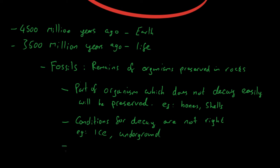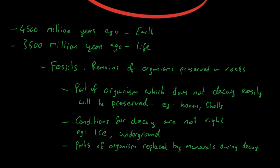Another example is when parts of an organism are actually replaced by minerals during decay. So if an organism is decaying and decay is happening, parts of the organism are actually replaced by other substances — minerals like calcium or sodium. Things which weren't actually present in the organism to start with could replace those parts that are decaying, but they're going to have the same shape. So what you have left is not actually the organism's remains, but it is the shape of the organism made of something else — and then that is preserved.